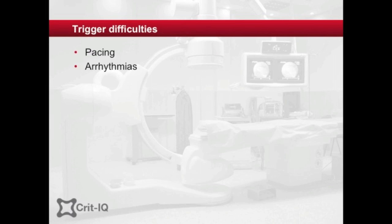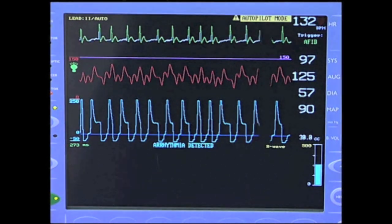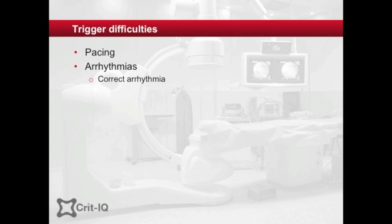Errors in triggering may occur with pacing or arrhythmias. In practice it is possible to support a paced patient with counterpulsation, but the trigger may need to change depending on the rhythm, the type of pacemaker — atrial or ventricular — and the patient's response to both therapies. Intra-aortic balloon pumps may find it more difficult to cope with irregular rhythms, for example ectopics or atrial fibrillation. The best way to overcome this is to attempt to restore a regular rhythm via electrolyte correction, cardioversion, or anti-arrhythmic medication. If the irregular rhythm persists, a trigger known as AFib can be utilized to deflate the balloon to match each R-wave as it occurs in real time — known as R-wave or real-time deflation.